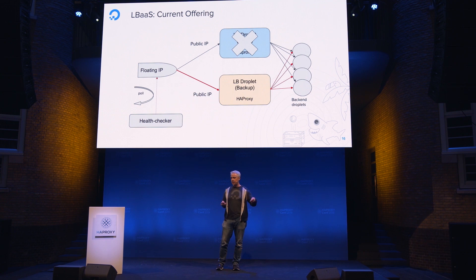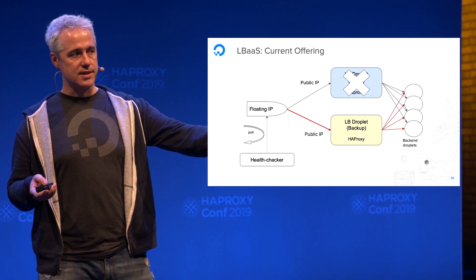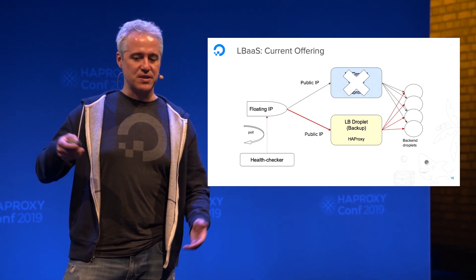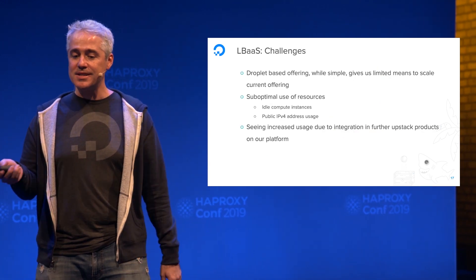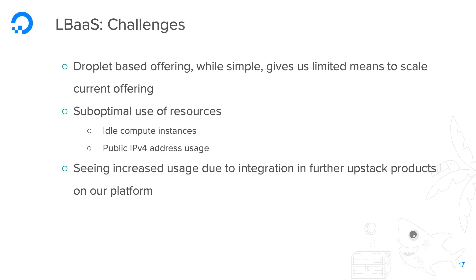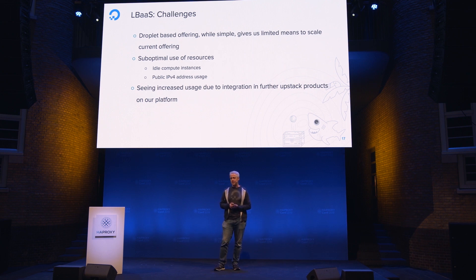We have a regional health checker that polls the floating IP consistently. If it notices the primary instance is unavailable, we fail over to the backup, destroy the primary instance, and stage another backup Droplet. This served 80% of the use case and gave us a sense of appetite in the market, but it does have challenges. Vertical scaling can only go so far, having to traverse two network stacks is suboptimal, an idle backup Droplet is poor infrastructure utilization, and for each Droplet created we allocate a public IPv4 address — which is scarce, expensive, and something we want to rein back.